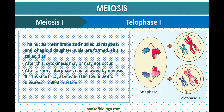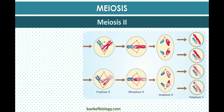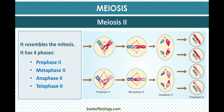After a short interphase, meiosis two follows. The stage between the two meiotic divisions is called interkinesis. DNA replication does not occur during interkinesis. Meiosis two resembles mitosis and has four phases: prophase two, metaphase two, anaphase two, and telophase two.